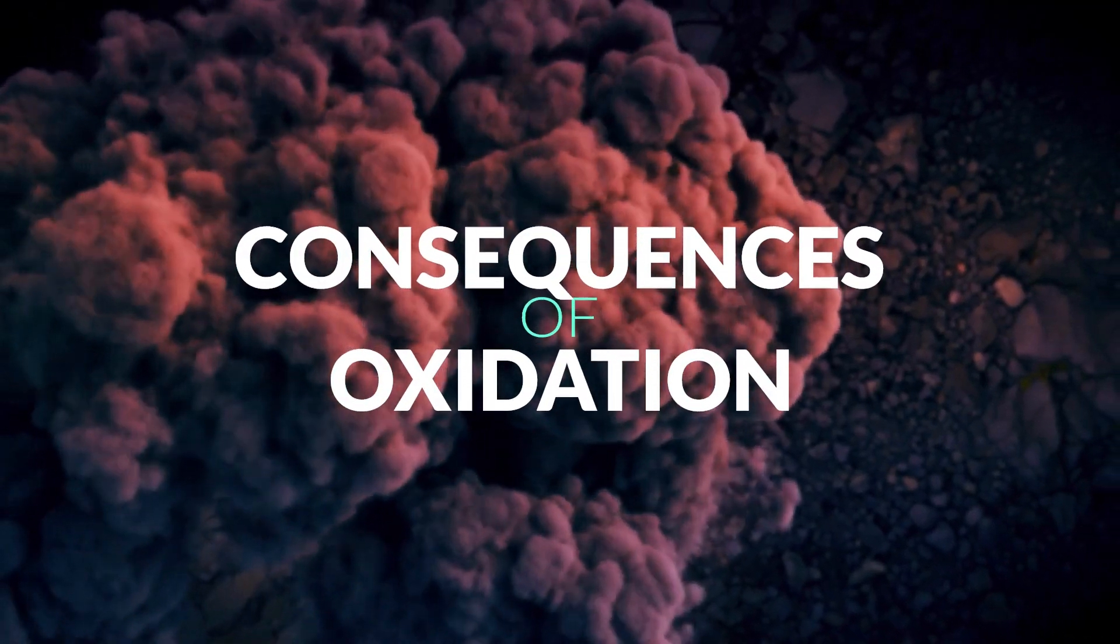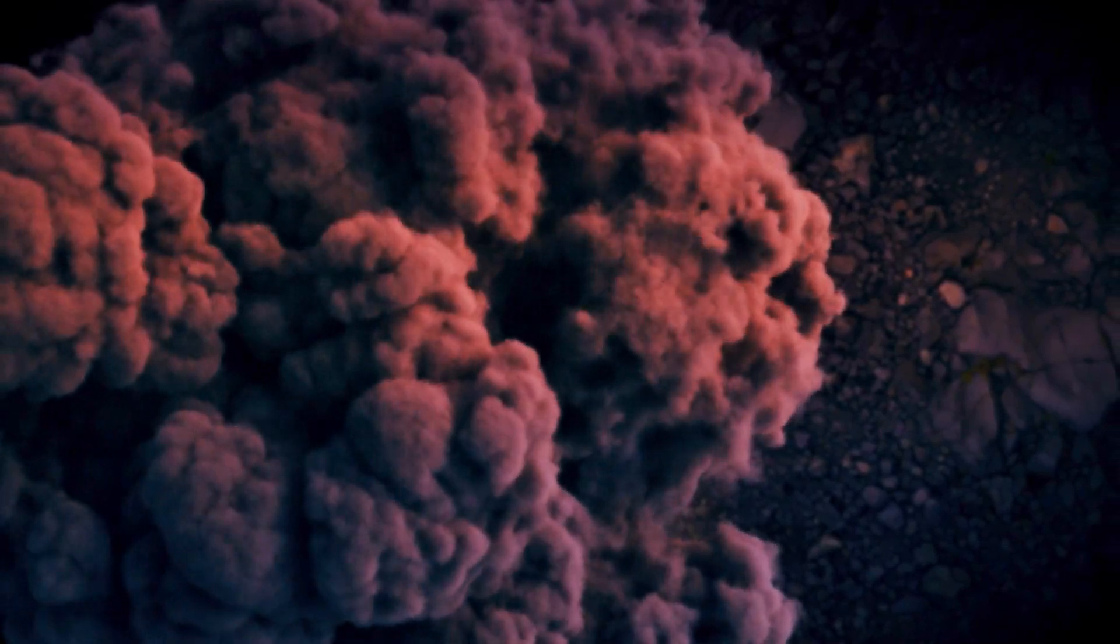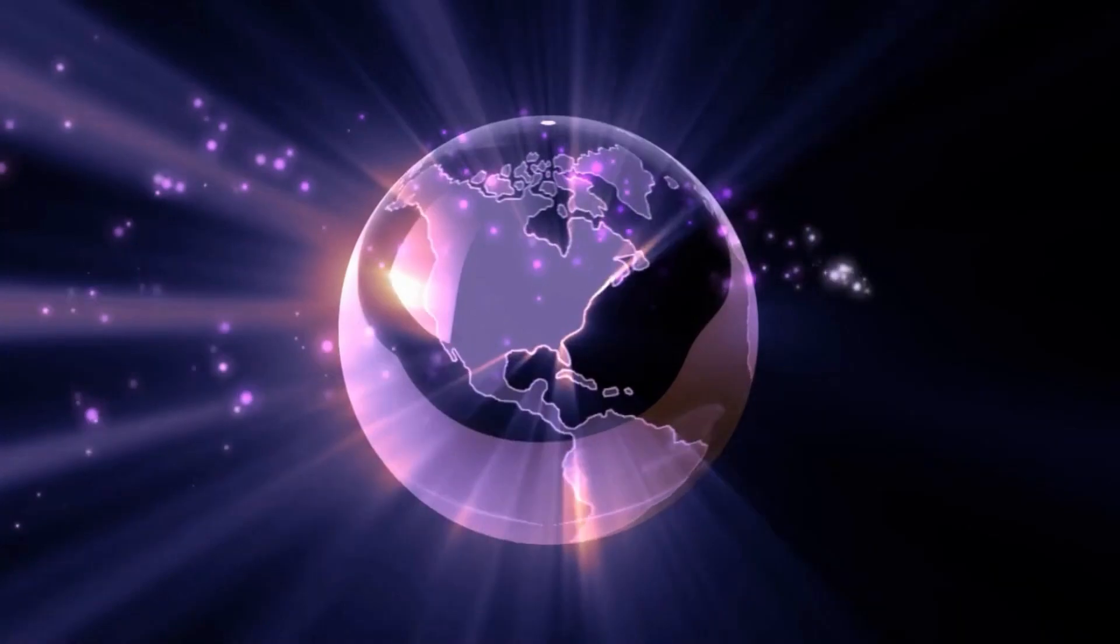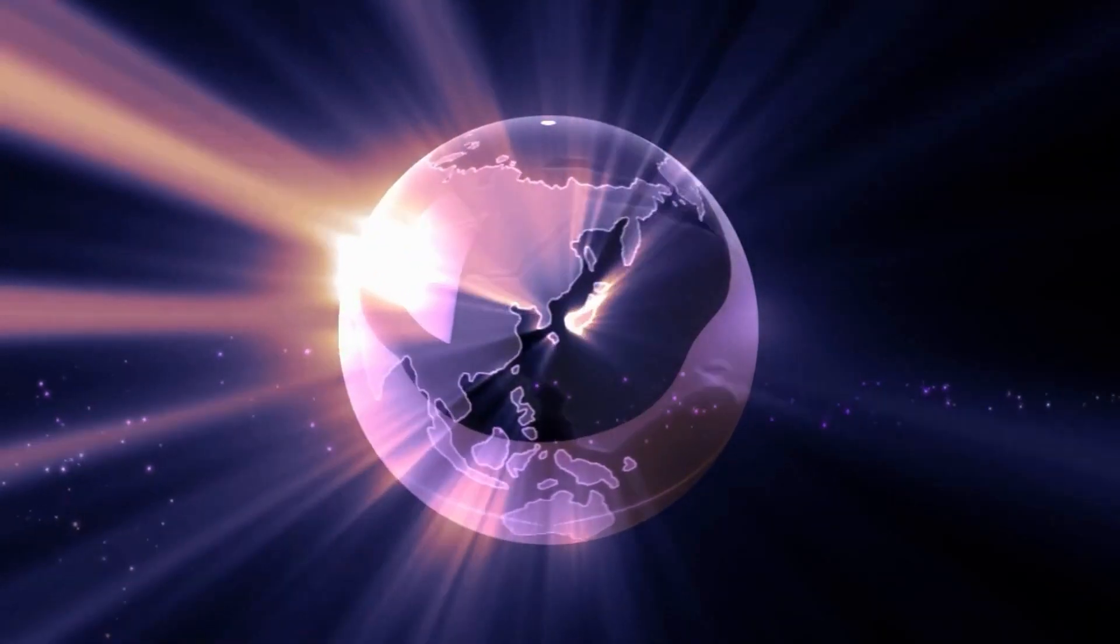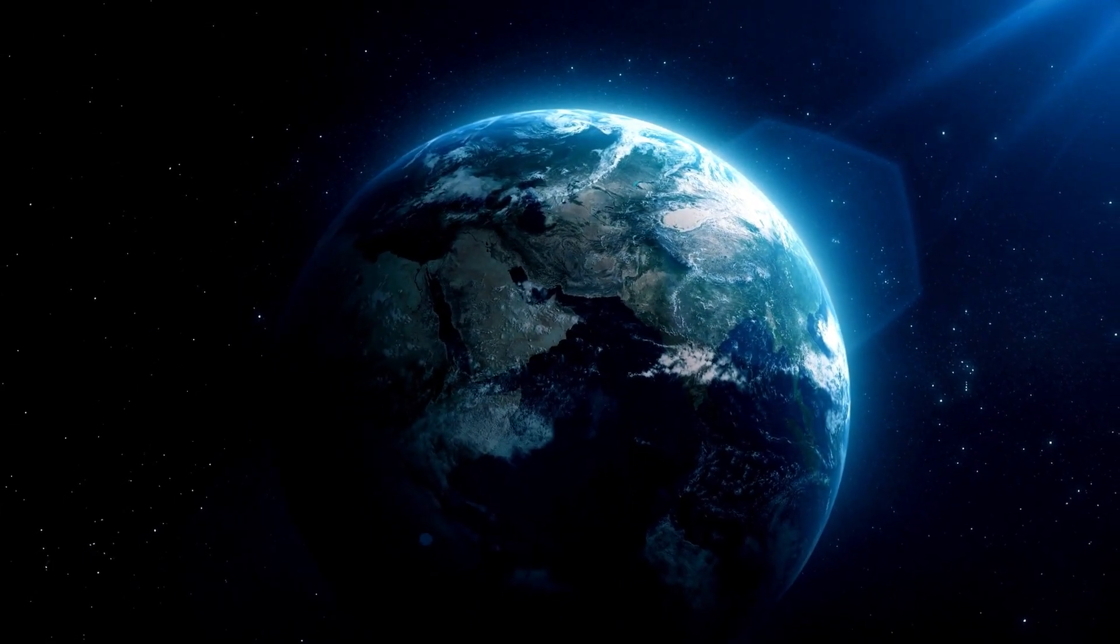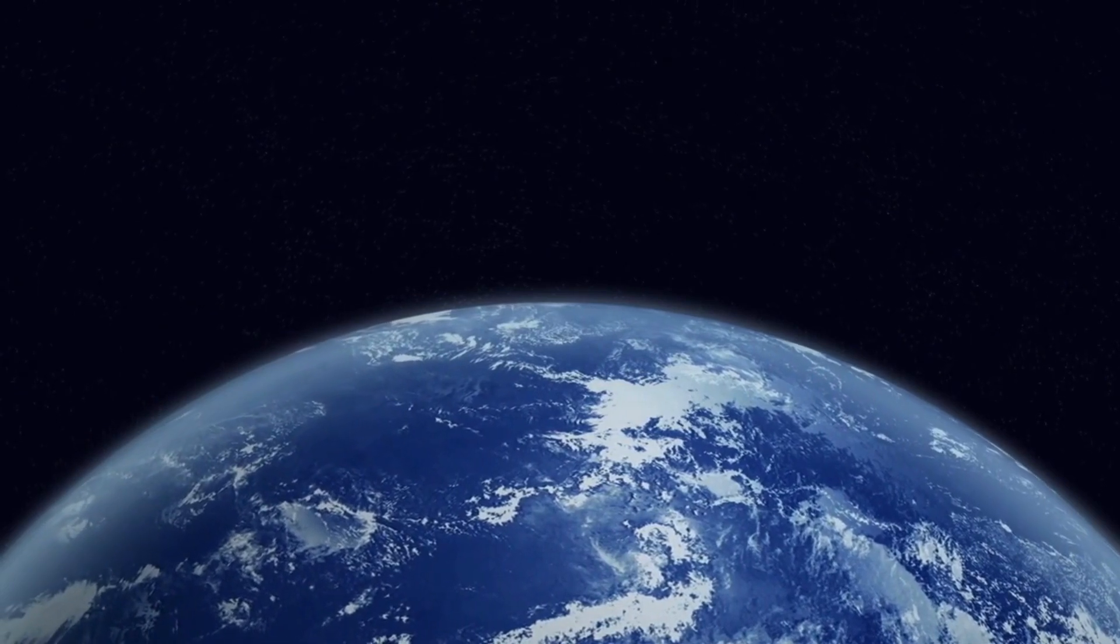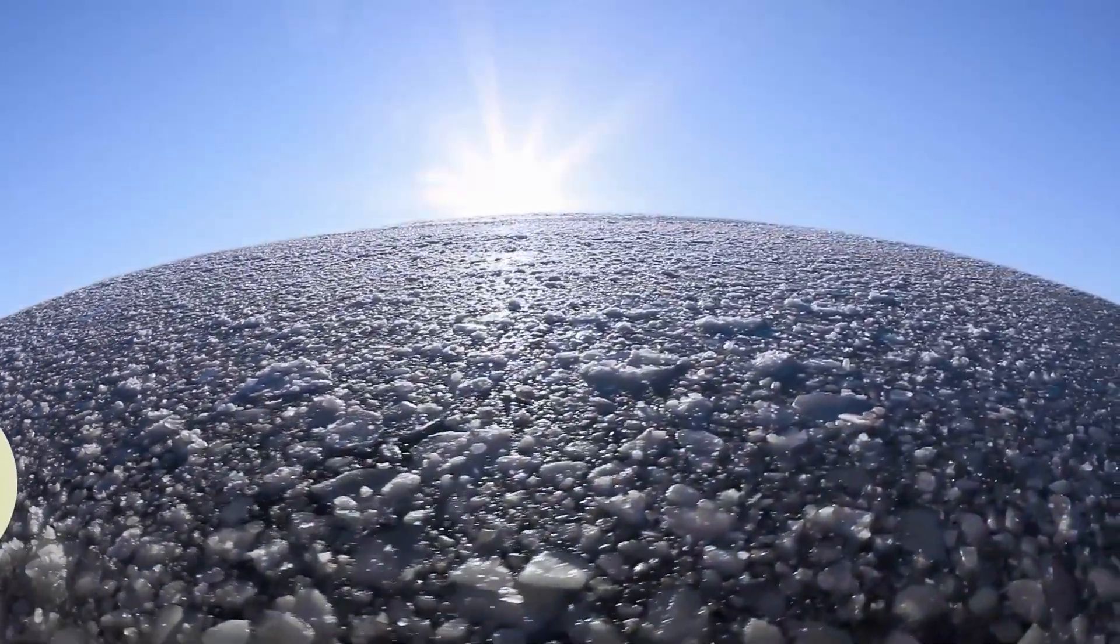Consequences of Oxidation. The great oxidation event had a profound impact on the planet, altering the climate, the geology, and the diversity of life. As oxygen accumulated, it oxidized atmospheric methane, a powerful greenhouse gas, into carbon dioxide and water. This weakened the greenhouse effect and cooled the planet, leading to a series of ice ages known as the Huronian Glaciation. This period of cooling occurred between 2.45 and 2.22 billion years ago. However, the rise of oxygen also brought new opportunities for life to thrive.